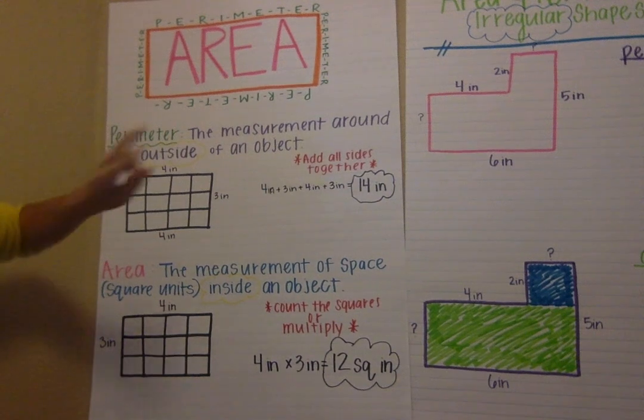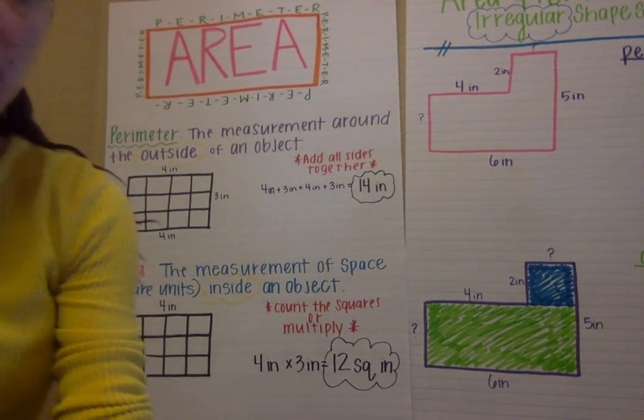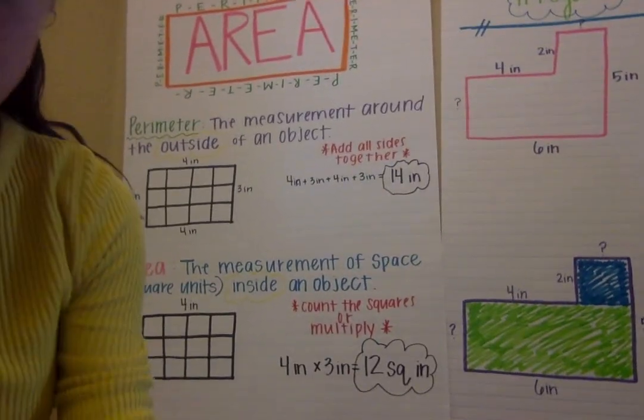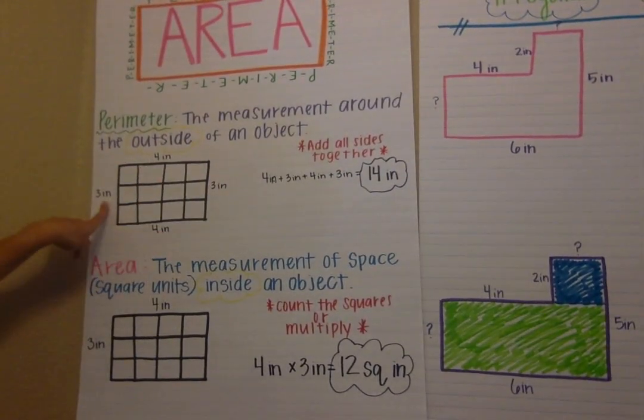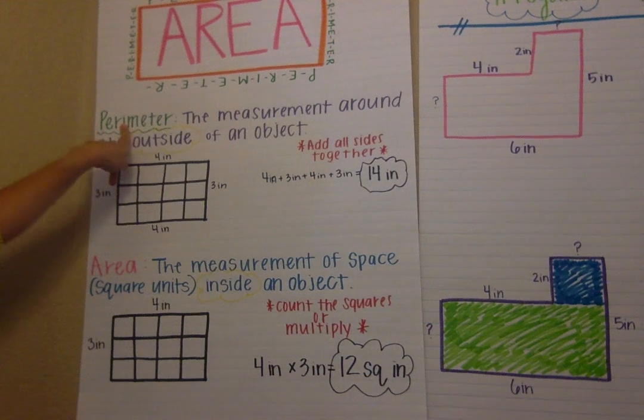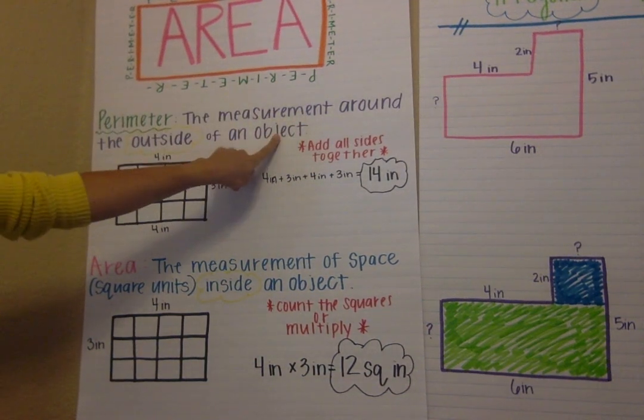There's two different methods that we can use. For perimeter, we are going to add every side that we see. Perimeter is the measurement around the outside of an object.